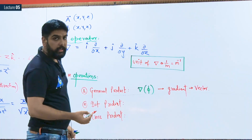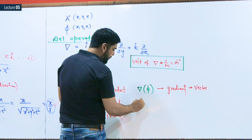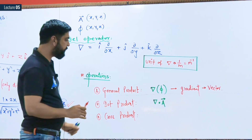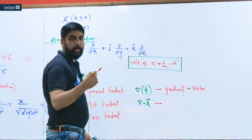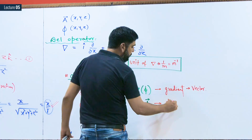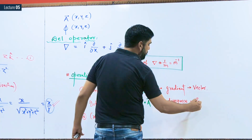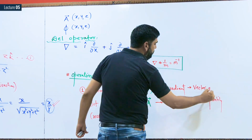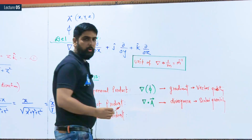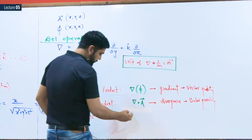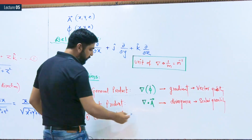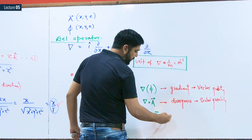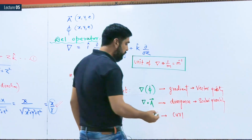Divergence is a scalar quantity and gradient is a vector quantity. The third operation is the cross product — del cross a vector point function — and the result is referred to as the curl of the vector point function. Curl is also a vector quantity.